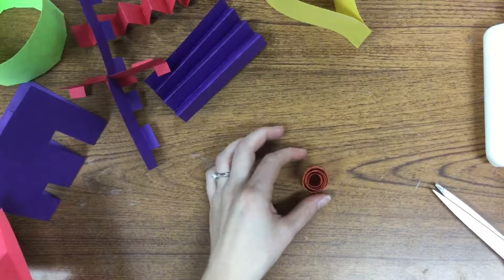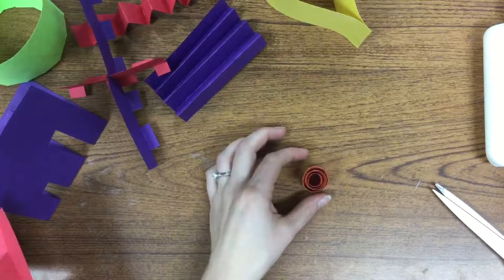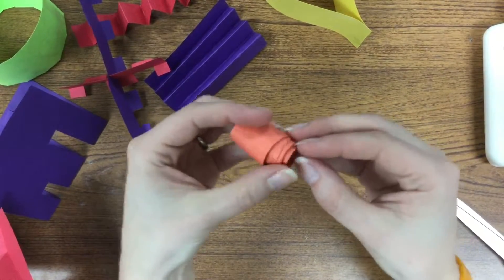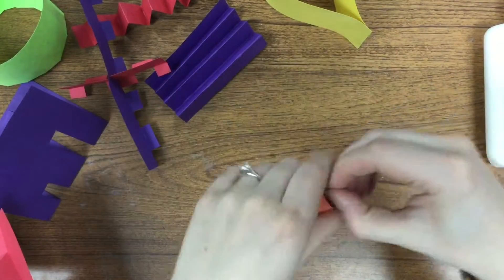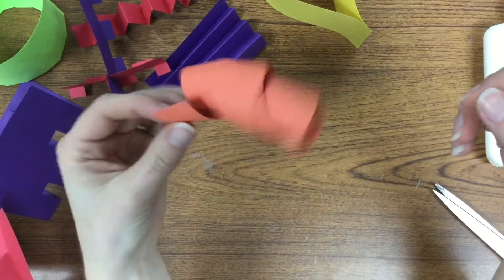At this point, we've just got a little tightly wound curl. But if I want to make it spring out, I can hold the outside and grab the center and gently pull it out.